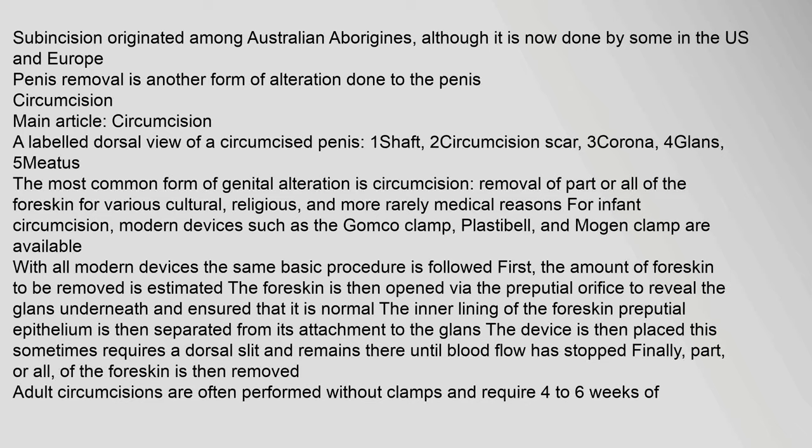The most common form of genital alteration is circumcision — removal of part or all of the foreskin for various cultural, religious, and more rarely medical reasons. For infant circumcision, modern devices such as the Gomco clamp, Plastibell, and Mogen clamp are available. The basic procedure is: first the amount of foreskin to be removed is estimated; the foreskin is then opened via the preputial orifice to reveal the glans; the inner lining of the foreskin is separated from the glans; the device is placed; and finally part or all of the foreskin is removed.